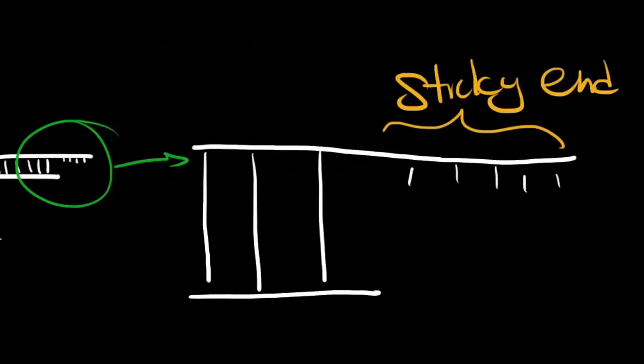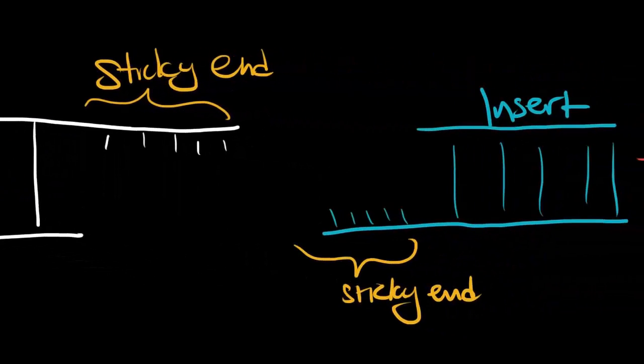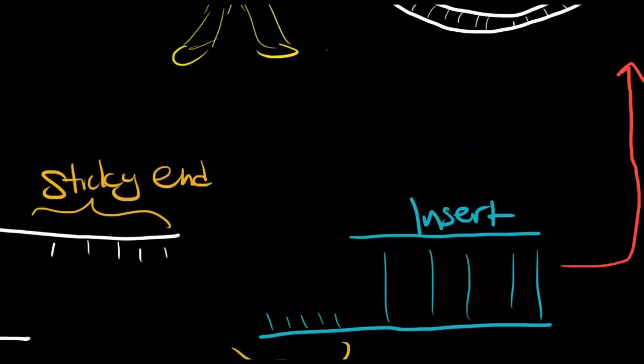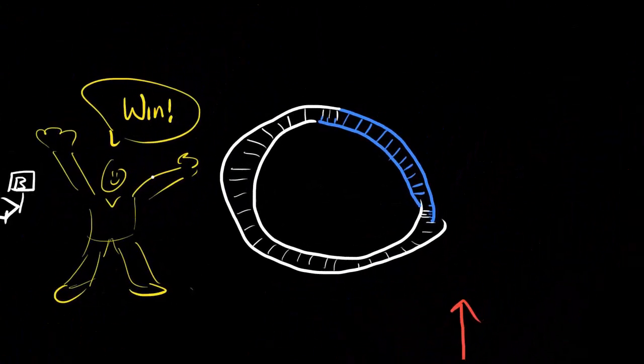When we produce an insert, we will use the same restriction enzyme to create the same sticky ends, which can stick to the vector's sticky ends. If we're successful in getting the insert into the vector, our vector is ready to be taken up by the bacteria.